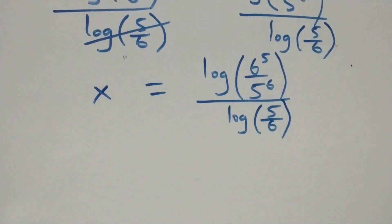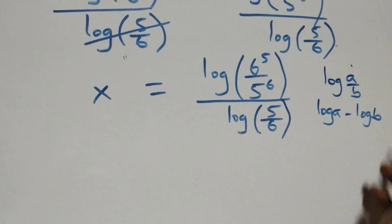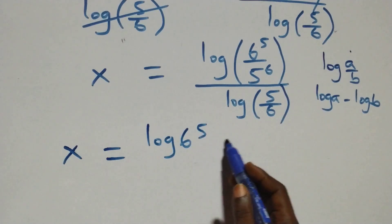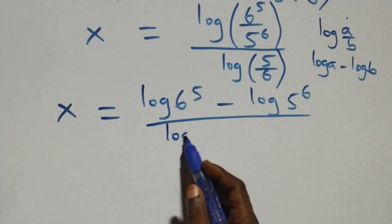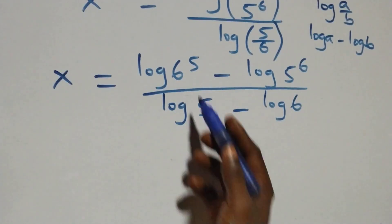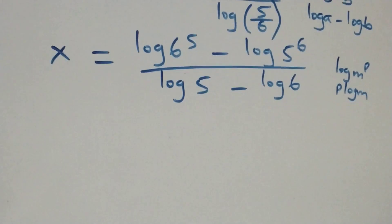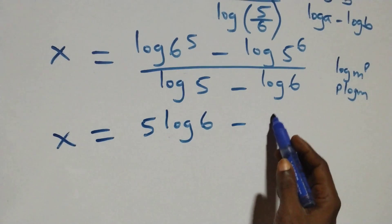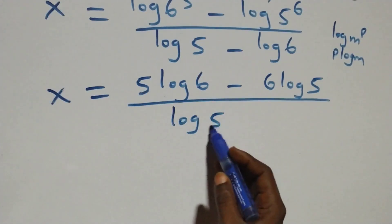Now we apply the law of logarithms: log(a over b) is the same as log a minus log b. So x equals log(6 raised to power 5) minus log(5 raised to power 6), divided by log 5 minus log 6. Applying the power rule of logs — p log m — this becomes x equals 5 log 6 minus 6 log 5, divided by log 5 minus log 6.